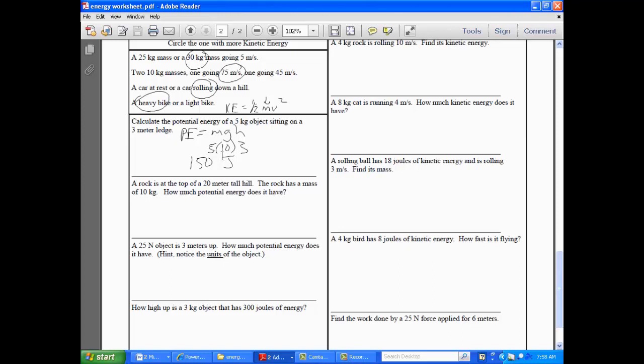All right. I'm going to move down the column here. So a rock is at the top of a 20 meter tall hill. The rock has a mass of 10 kilograms. What is the potential energy? So, again, potential energy equals mass times gravity times height. We are given a mass of 10. Gravity is 10. Height is 20. So what does that come out to be? 2,000. So that's 2,000 joules of potential energy. So you're noticing, guys, that these formulas are a lot easier than the formulas that we were using last unit, particularly the conservation of momentum formula. These are pretty simple.